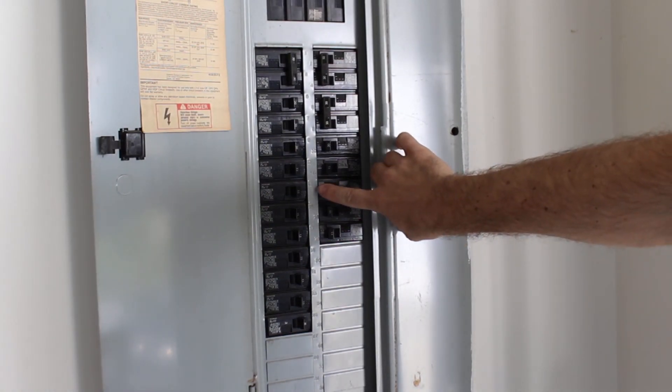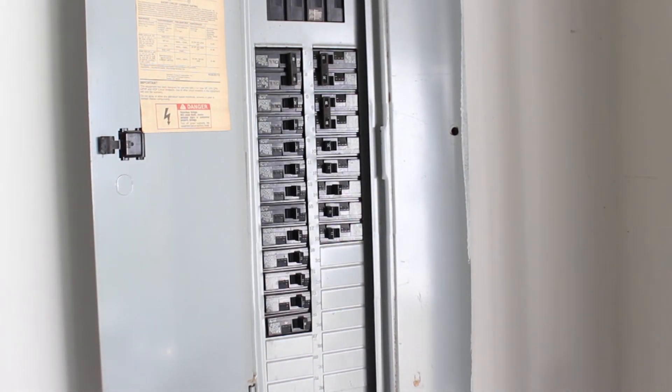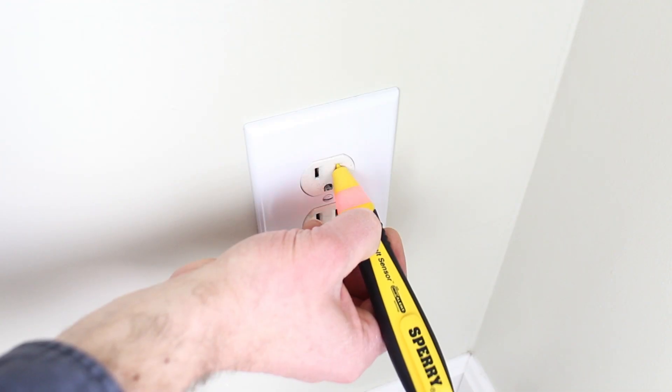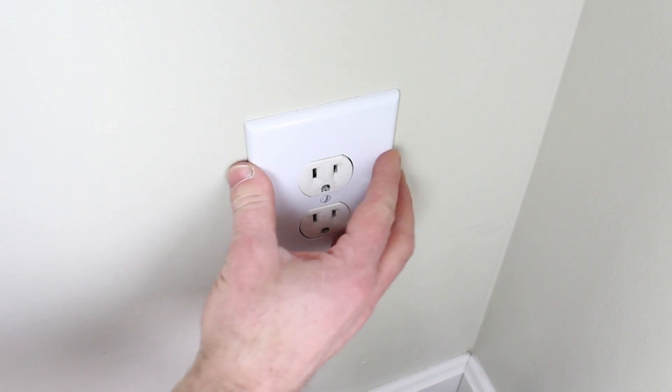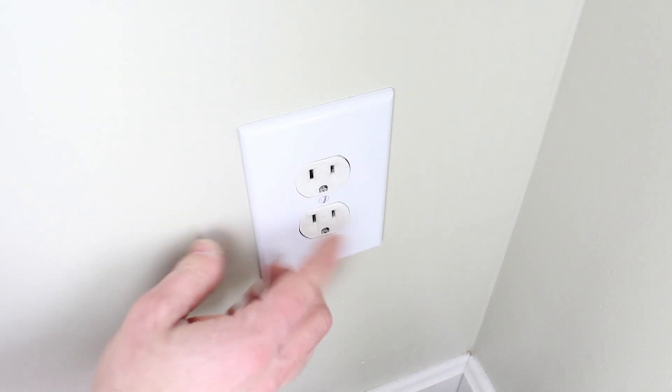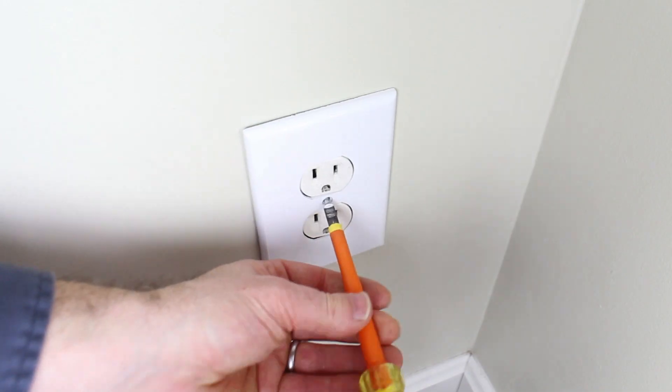Then go ahead and turn the electric off at the panel or fuse box. Grab yourself your non-contact voltage tester. Double check the electric is off and you can see how this outlet is wiggling. That's a no-no. I'm going to show you how to fix that next.